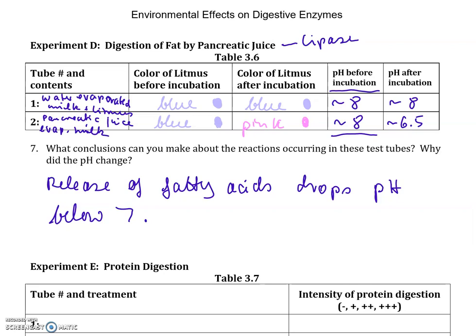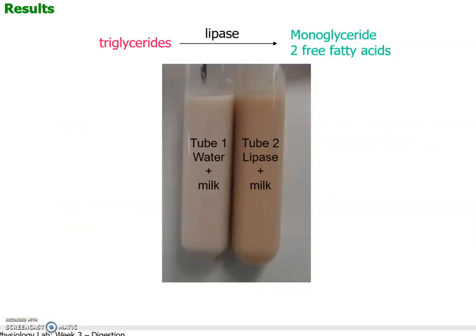After incubation, in test tube number 1 there's no enzyme, so nothing happens and the pH doesn't change. But in test tube number 2, the lipase from the pancreatic juice digested the fat — the triglyceride — into glycerol plus fatty acids. The release of fatty acids dropped the pH from 8 down to about 6.5, just below 7, which is enough to shift the litmus color to a baby pink.